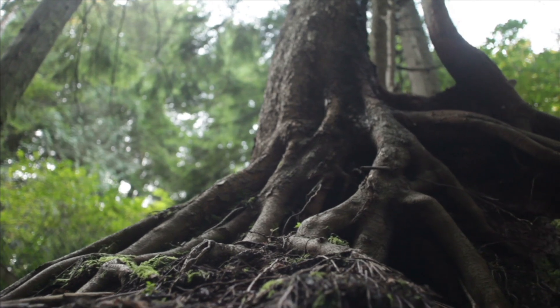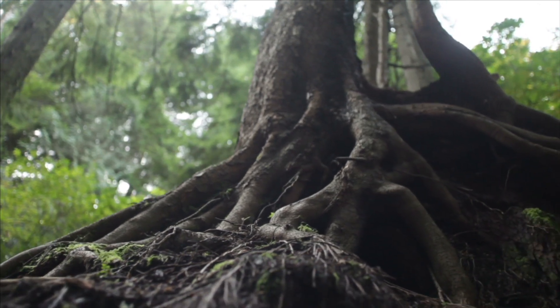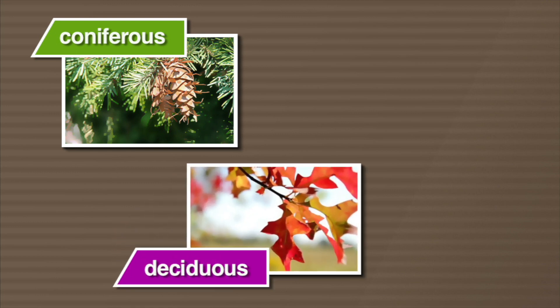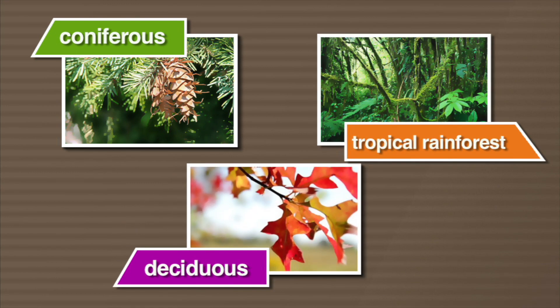There are three kinds of forests found on Earth: coniferous, deciduous, and tropical rainforests.